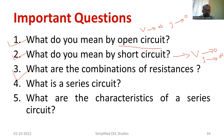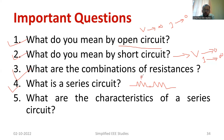Moving on to the third question: what are the combinations of resistance? There are three — series, parallel, and series-parallel. In a series circuit, suppose you have two resistors. If you connect them such that the second terminal of the first resistor is connected to the starting terminal of the second resistor, this combination is known as a series combination.